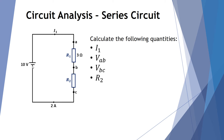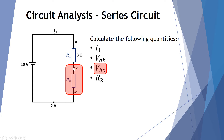In our first task we're asked to work out the current at position 1 at the top, the voltage across points A and B — also called the voltage across resistor 1 — the voltage between points B and C — also known as the voltage across resistor 2 — and also the value of resistor 2. We're given that resistor 1 is 3 ohms.